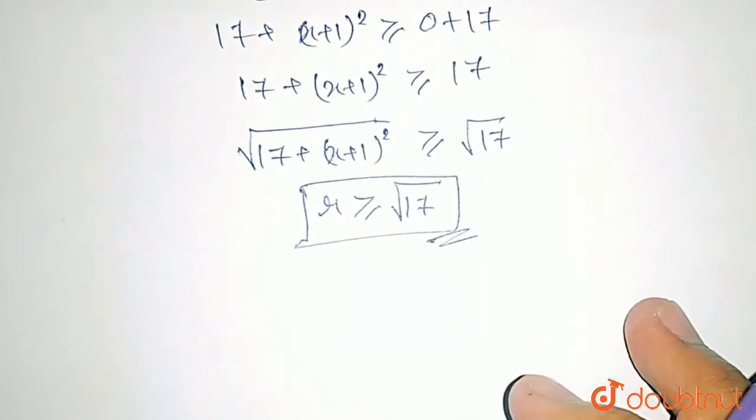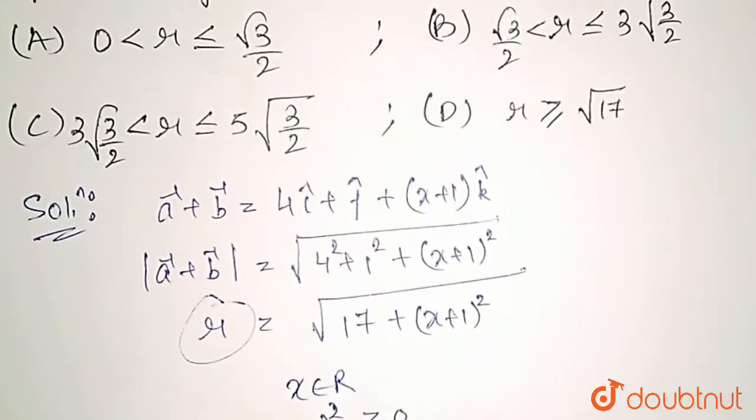This is the range of r. So, the correct option is option D.